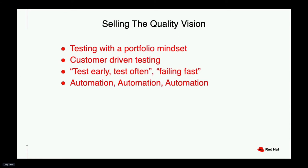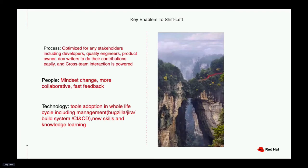The final point: automation, automation, automation. Automation always plays a very critical role in powering shift-left testing practice. If your team is changing from a traditional quality model to a shift-left quality model, this is a big transition. Perhaps you need to think about how your team can be ready for that.